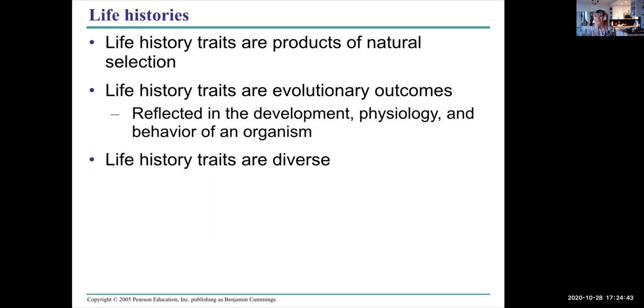Life history traits are products of natural selection. Whatever environment organisms find themselves in has determined the kind of survivorship curve or the kind of breeding style or number of offspring that they have. It's reflected in development, physiology, and behavior of an organism. And they're very diverse.